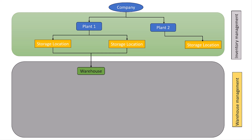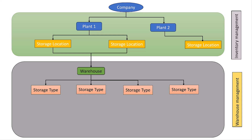A warehouse comes under a storage location, so a warehouse can be related to different storage locations. Within a warehouse we have different storage types. Storage type is the logical division of a warehouse based on characteristics and purpose. For example, your warehouse stores different kinds of materials like bulky materials, small materials, and hazardous materials, so for different materials we manage different storage types.